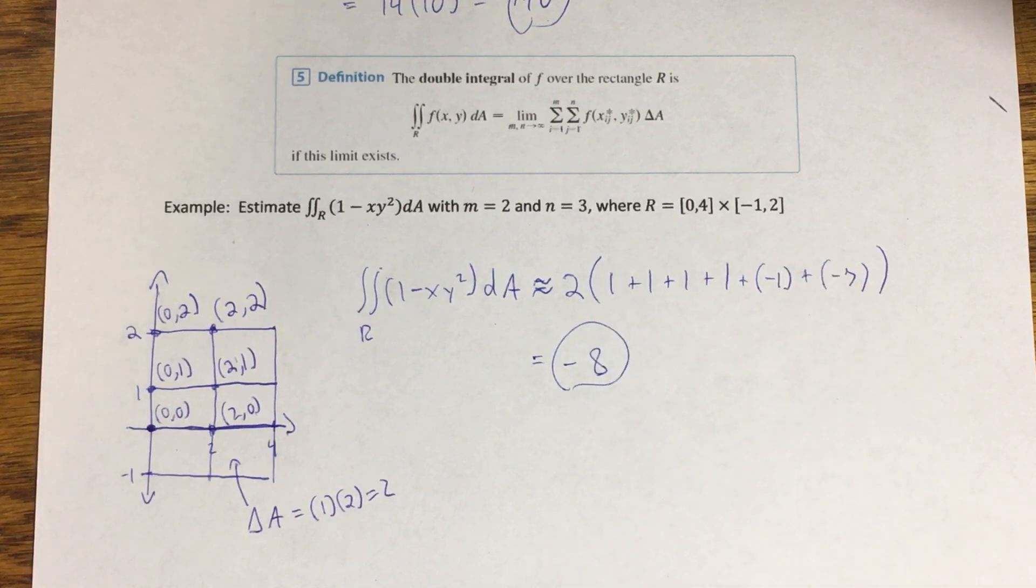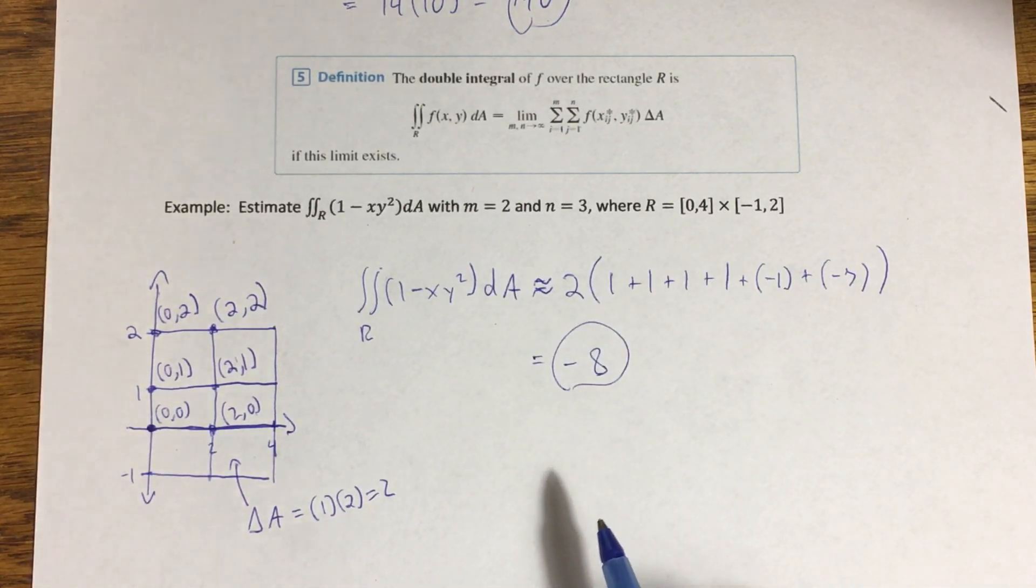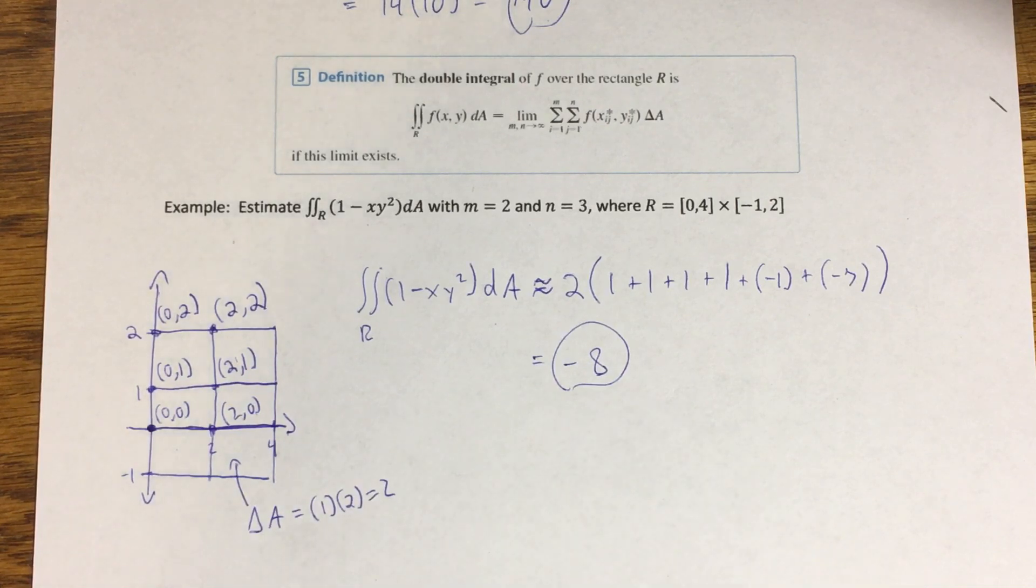That simplifies the multiplication or the computation a little bit, and that way I'm not dealing with some big messy double summation. So that's one way to approximate or estimate that integral. I could have chosen those sample points elsewhere and gotten different estimations.